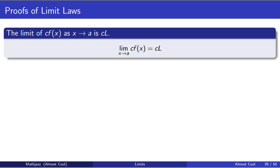From here on out, we'll be talking about arbitrary functions f of x and g of x. The limits will exist because we already assumed that at the beginning of the video. But we won't be able to give specific formulas for delta. We'll just accept that we get some delta from the limit of f or the limit of g existing, and then manipulate that delta into a form that works for our new function. In this case, our function is c times f. We want to show that the limit of c times f as x goes to a is just c times l, where l was the limit of f at a, and c is the given constant.